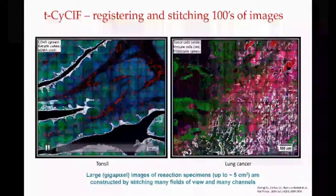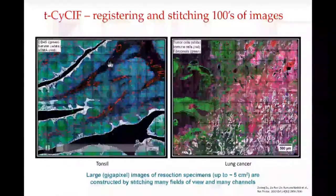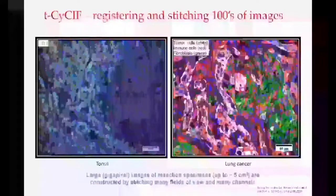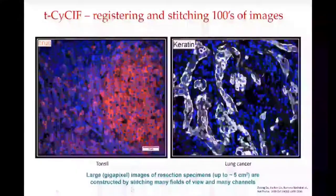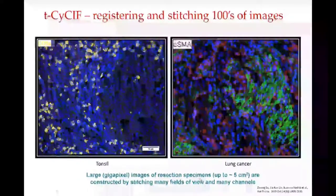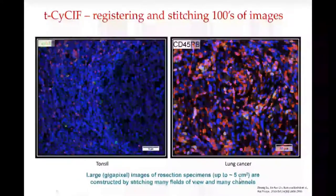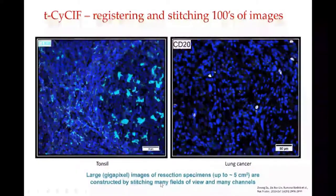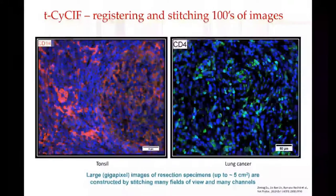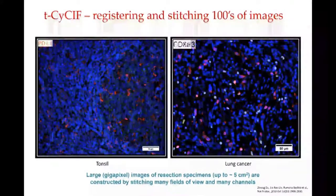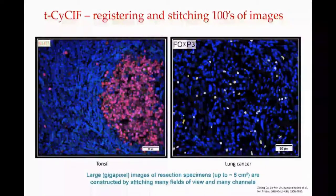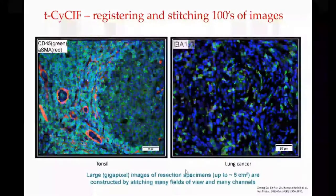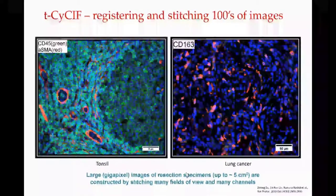Just two examples to give a sense of the imaging: you can see grids — individual fields of view stitched together — from a tonsil and from a lung cancer. We generate large gigapixel images of resection specimens up to five square centimeters in size, constructing complex datasets by stitching many views. You can track each channel and see how different markers are present and their spatial distribution.